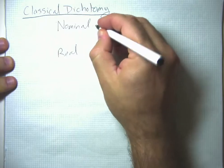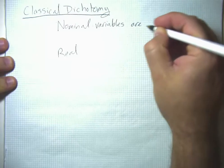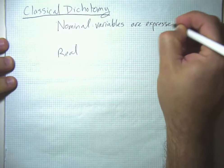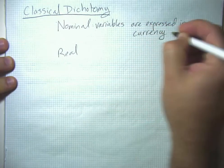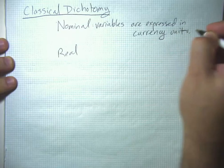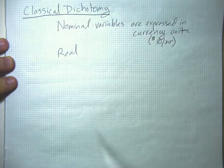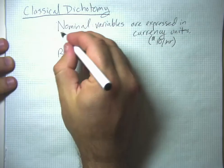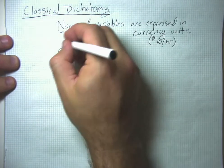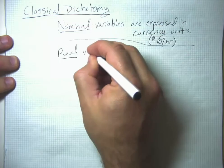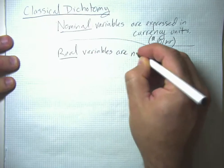Nominal variables are expressed in currency units. So for instance, your nominal wage might be $10 an hour. Nominal is a word that basically comes back to the idea of name — like 'nombre' in Spanish.